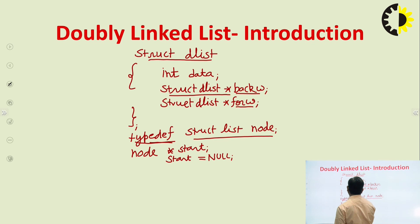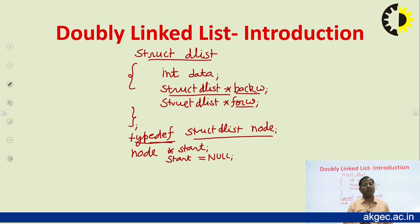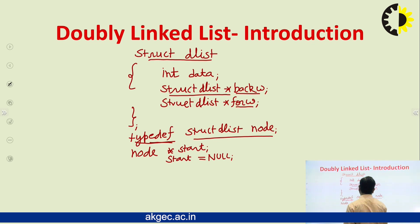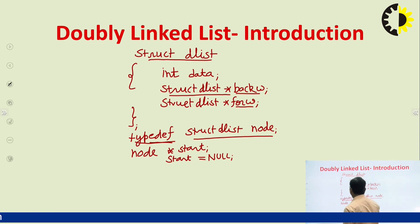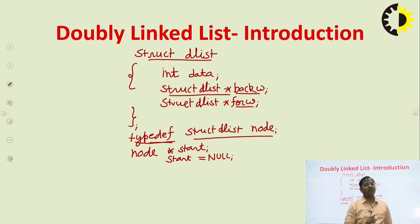typedef is used to provide an alias name, and the syntax is: typedef old_name new_name. So here we can write node in place of struct dlist. In the next line we declare a start pointer, and initially the doubly linked list is empty, so the start pointer will contain null. This is the structure declaration of a node of the doubly linked list in C.